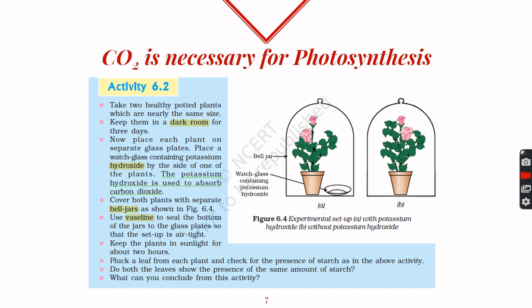Plant B is receiving sunlight and has air trapped inside, so it receives both oxygen and carbon dioxide. Plant A is receiving sunlight and oxygen, but it is not getting carbon dioxide because the carbon dioxide has been dissolved by the potassium hydroxide.